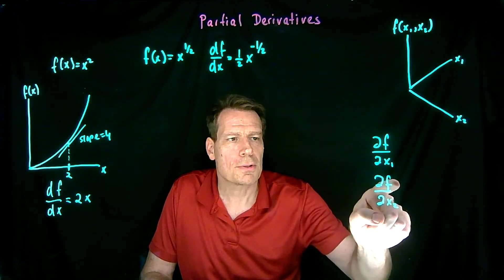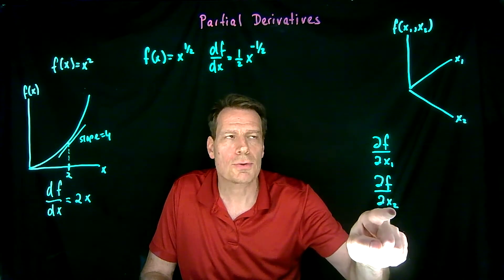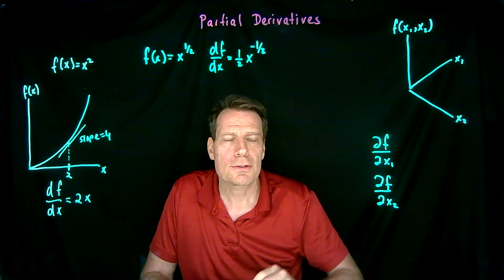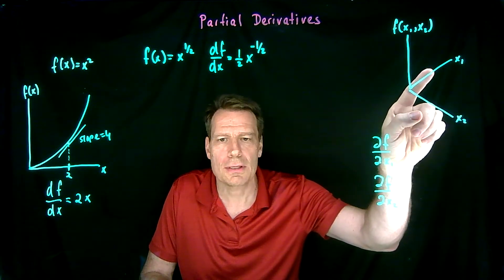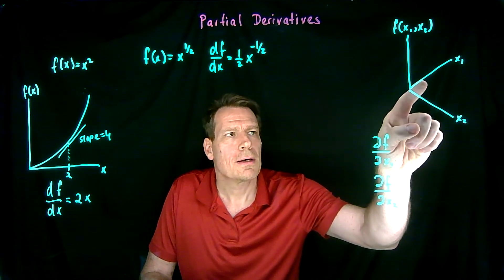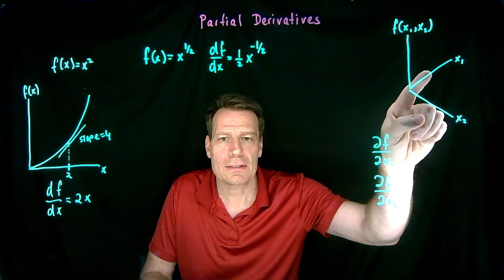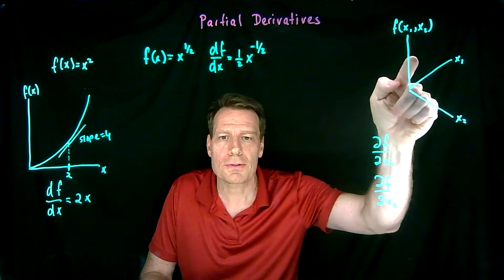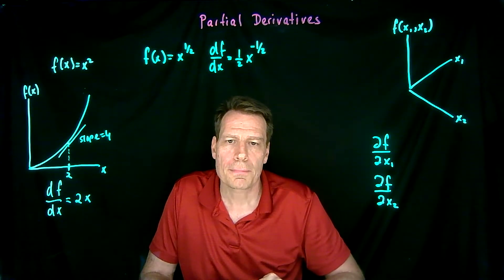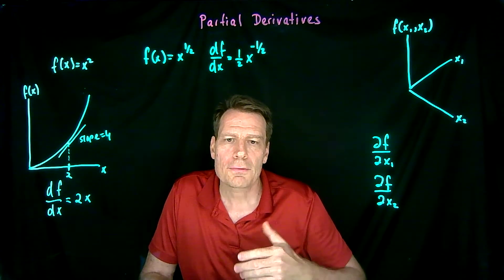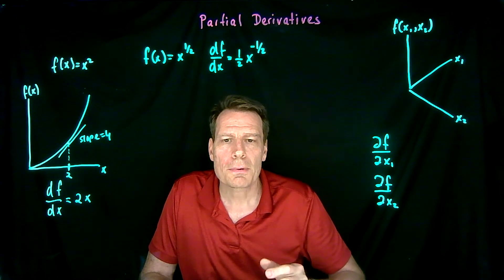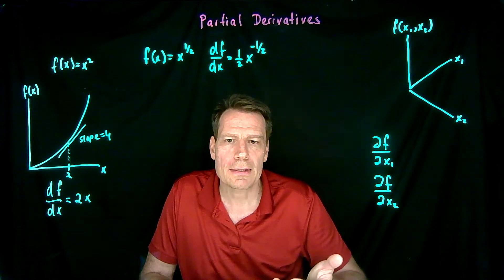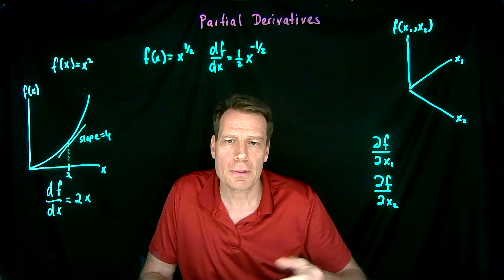The partial derivative of f with respect to x1 holds the x2 variable fixed and tells us what the slopes are of the slices that hold x2 fixed. Similarly, the partial derivative of f with respect to x2 holds x1 fixed and tells us what the slope of this function is holding x1 fixed — in other words, what's the slope of slices of the function that run this way? I've created another animation to help clarify this a little bit more, so let's watch that and then we'll come back and say a few more things.